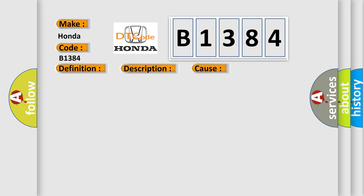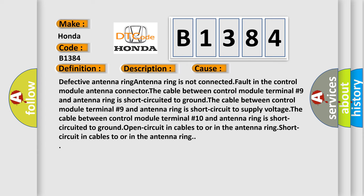This diagnostic error occurs most often in these cases: Defective antenna ring, antenna ring is not connected, fault in the control module antenna connector, the cable between control module terminal number 9 and antenna ring is short-circuited to ground, the cable between control module terminal number 9 and antenna ring is short-circuited to supply voltage, the cable between control module terminal number 10 and antenna ring is short-circuited to ground, open circuit in cables to or in the antenna ring, short circuit in cables to or in the antenna ring.